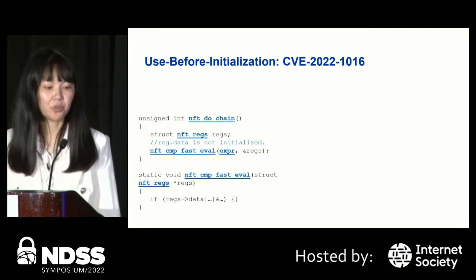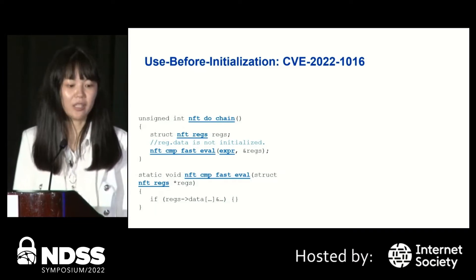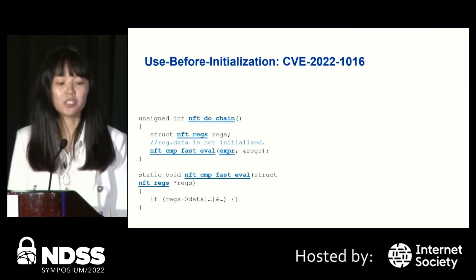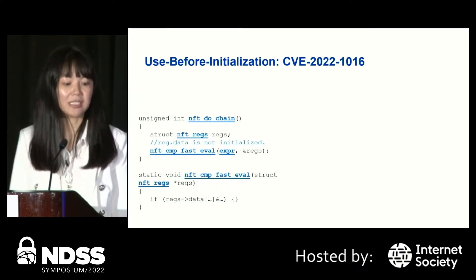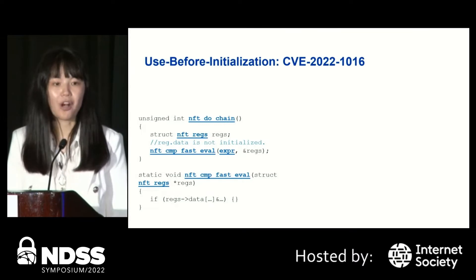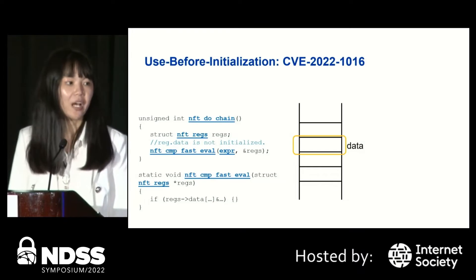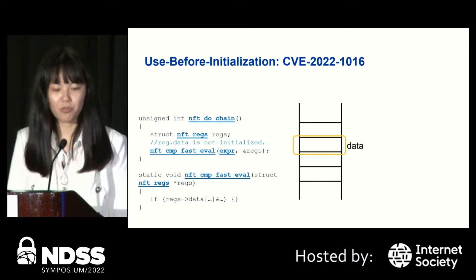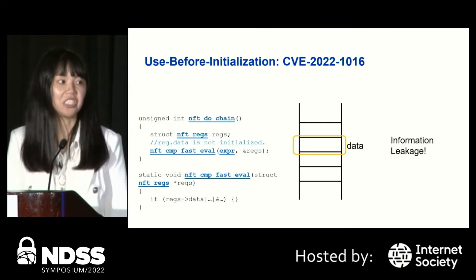UB stands for Use Before Initialization. Here is an example: we have a function nft_dual_chain, and it declares a structure called regs on the stack, and the data field inside this structure is not initialized. Later on, the address of this structure is passed to the callee called nft_cmp_fast_eval, and inside this callee, it directly reads the uninitialized field from this data field. Since this data field is not initialized, it reads out whatever was left in the stack before. Combined with some side effect, it will cause information leakage, which is pretty dangerous in the Linux kernel.